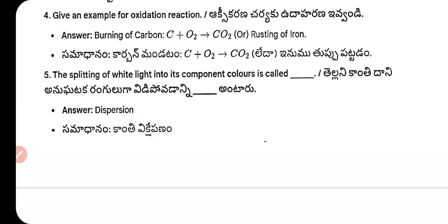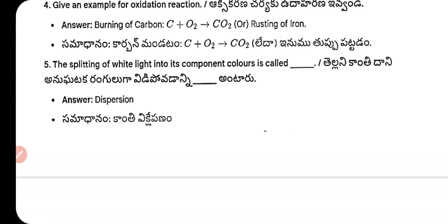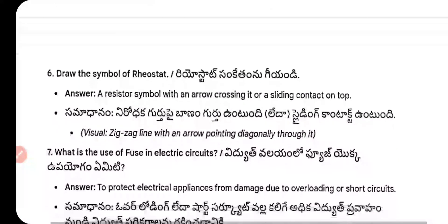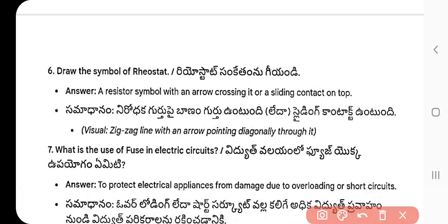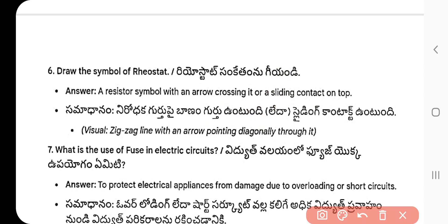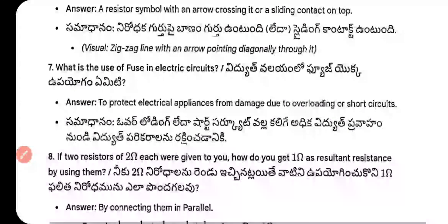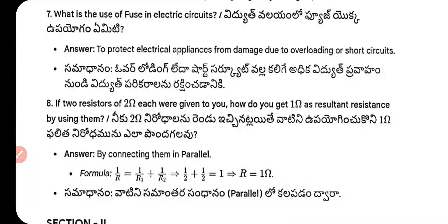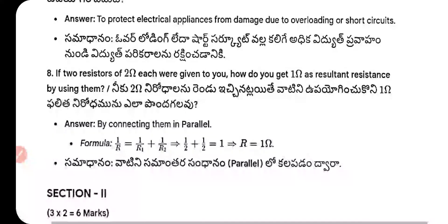Question 5 — The splitting of white light into its component colors is called dispersion. Question 6 — The symbol of the rheostat is drawn. Question 7 — Use of fuse: to protect electrical appliances from damage due to overloading or short circuit.